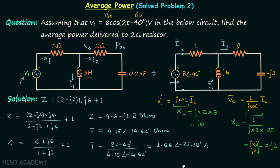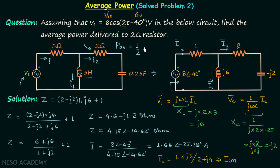Now we will use the current divider rule to find I2 phasor. According to the current divider rule, I2 phasor = I phasor × j6 / (2 − j2 + j6), which equals I phasor × j6 / (2 + j4). Once you have I2 phasor, you can find the maximum current I2m, and the average power is P = ½ × I2m² × 2.